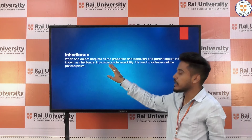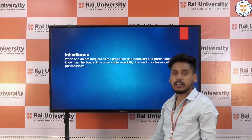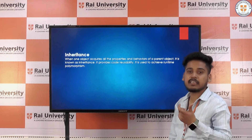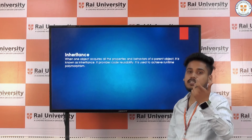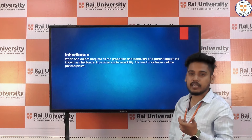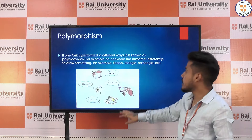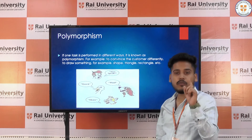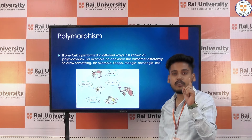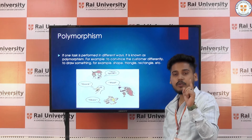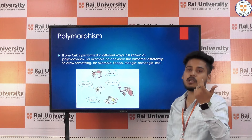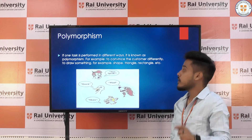And what is inheritance? Inheritance means when a child class inherits the property of a parent class, that is known as inheritance. And another one is polymorphism — when one task is performed in a different way, that is known as polymorphism.